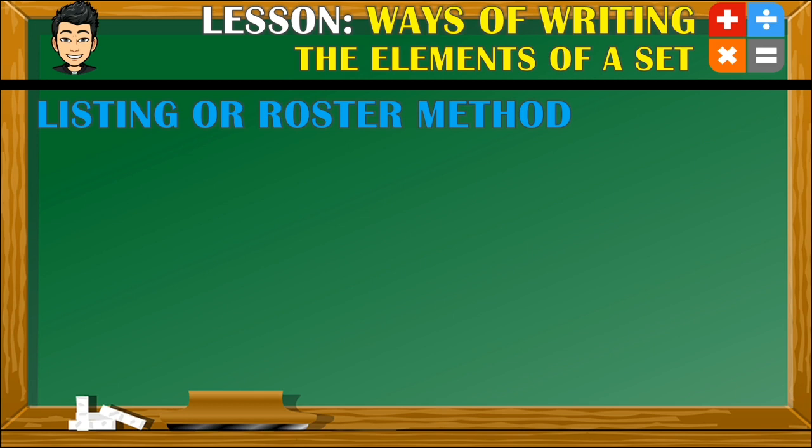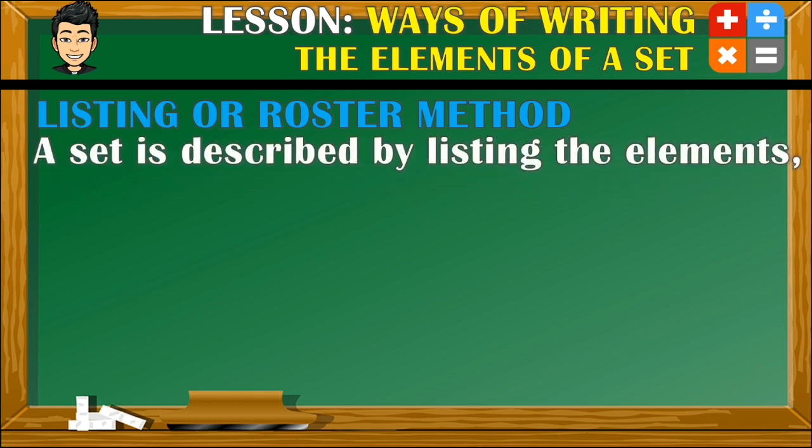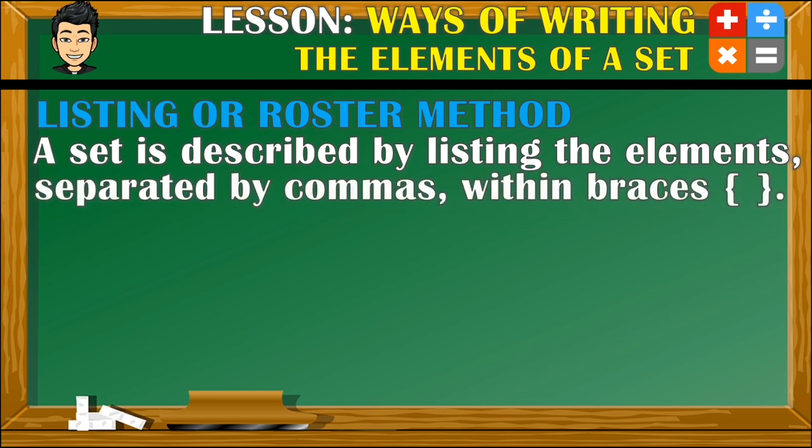In this method, a set is described by listing the elements separated by commas within braces or curly brackets. This is the most common and simple way of writing the elements of a given set, and I am pretty sure that you are familiar with it already.